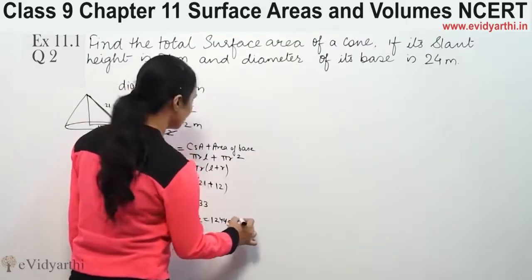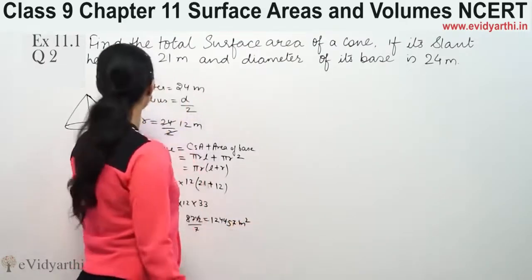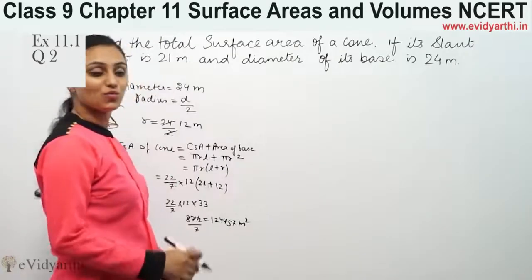This is in meters, so meter square. This is the total surface area: 1244.57 meter square.